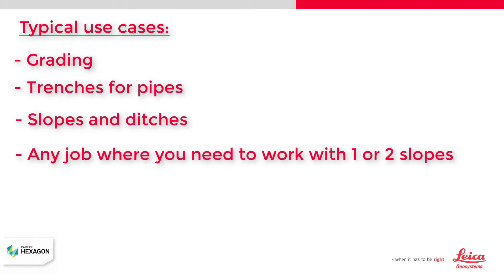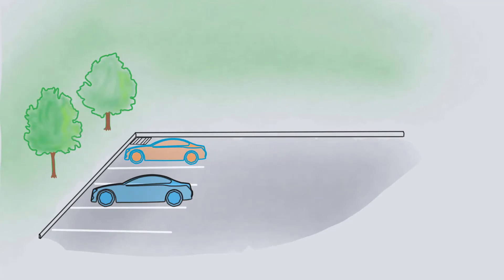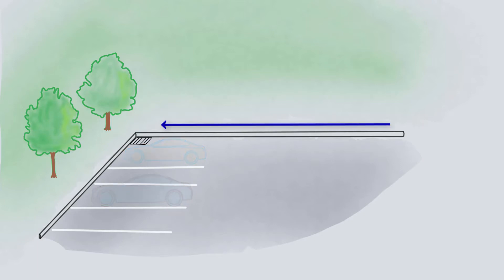In this example, we will follow the creation of a parking lot. Our parking lot has two slopes: one with a 20 per mil slope, which we will use as the x-direction, and one with a 10 per mil slope, which we will use as the y-direction.